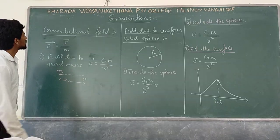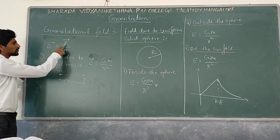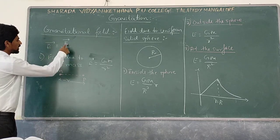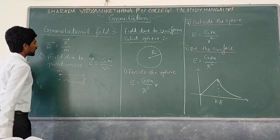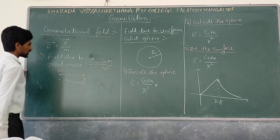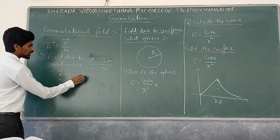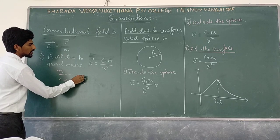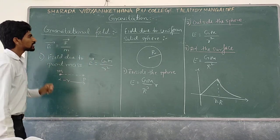Next is gravitational field. What is gravitational field? Gravitational field is gravitational force per unit mass — F by M. Since gravitational force is GMm by R square, the field equation is given by GM by R square. For a mass M, at a point P at distance R, the gravitational field is GM by R square.